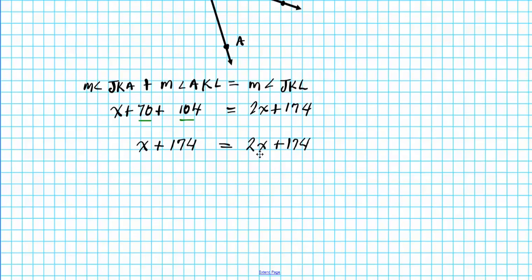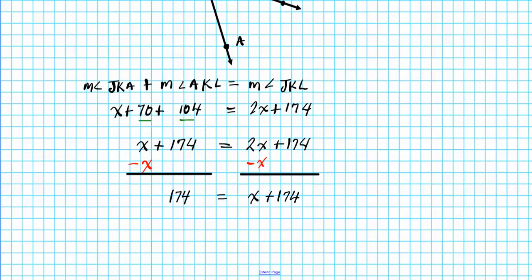We collect like terms, putting variables on one side. Subtracting x from both sides gives us 174 equals x plus 174. Then we subtract 174 from both sides, and on the left side 174 minus 174 is 0, while on the right side we have x equals 0.